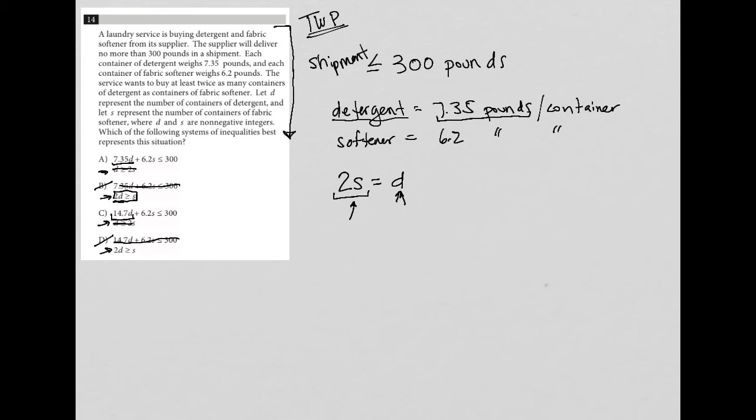So 7.35 D, which is what I see in answer choice A, makes the most sense. 6.2 S, the 6.2 pounds goes along with the softener. And we do want it to be less than or equal to 300 pounds.